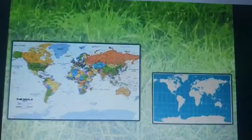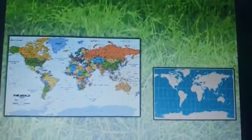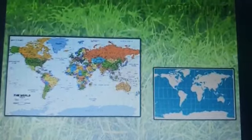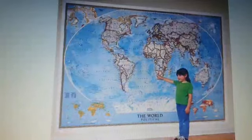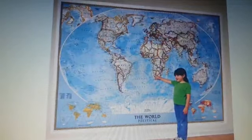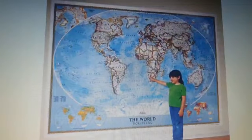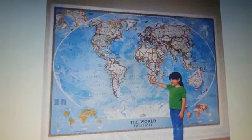Maps are of many kinds. Small maps can be pasted in books, folded and kept in our pockets. Sometimes we use large shaped maps and hang them on the walls. These are called wall maps.